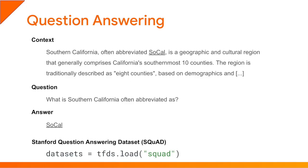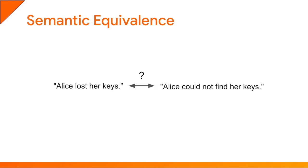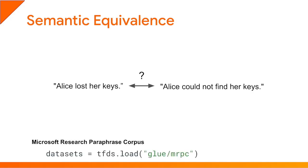One of the most popular question answering datasets is SQuAD from Stanford University, which you can easily load using TensorFlow Datasets. Some of the questions are very challenging for a machine, requiring common sense or a good understanding of what the text is about. There are also datasets for other NLP tasks, such as semantic equivalence — where the goal is to figure out whether two sentences are equivalent. For example, the sentence 'Alice lost her keys' is generally equivalent to 'Alice could not find her keys.' If you're interested in semantic equivalence, you can load the Microsoft Research Paraphrase Corpus, or MRPC.